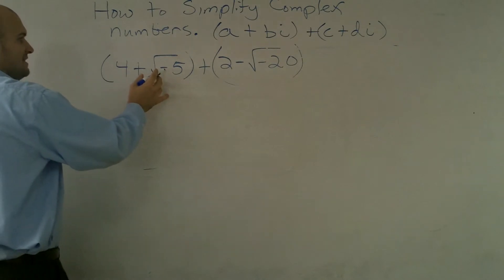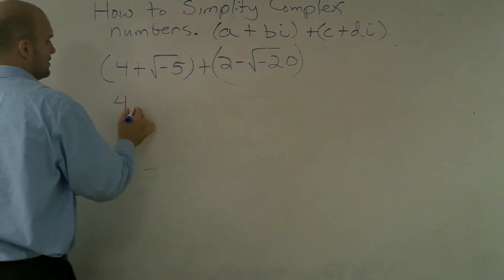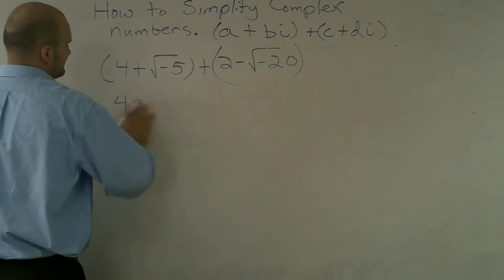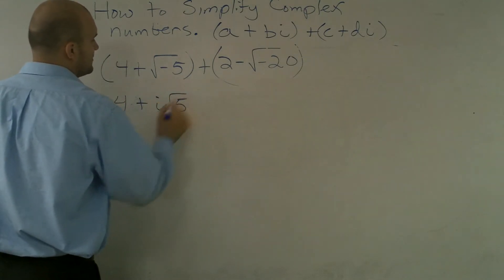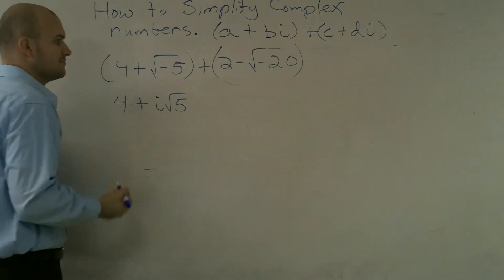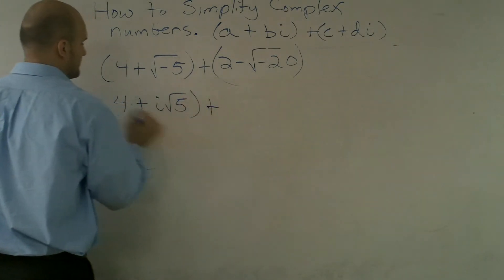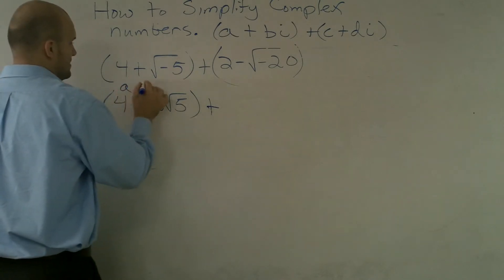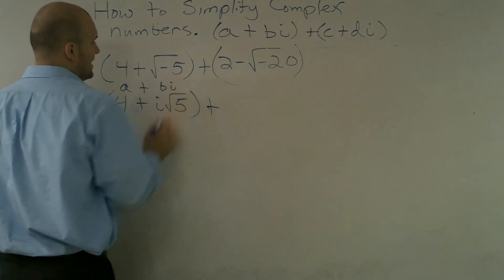I need to take that out to be an i, so it's going to become 4 + i√5. You could also write the i afterwards, but I prefer to always write it in front—it's easier for me to see it.